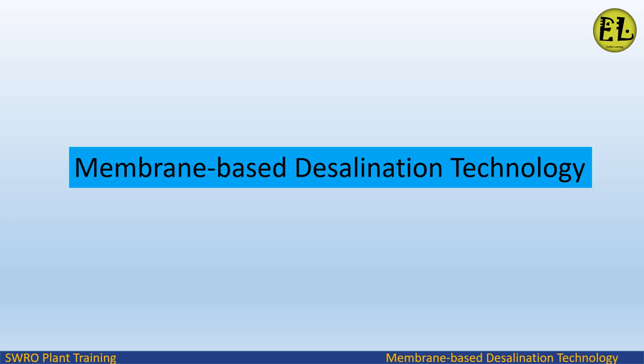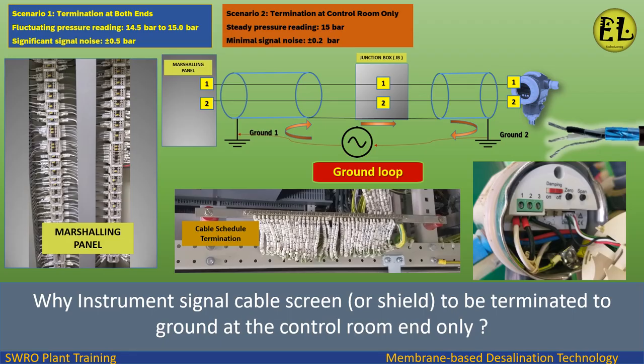Welcome to Endless Learning Training Series: The Membrane Based Desalination Technology. In this presentation we will study about why instrument signal cable screen or shield should be terminated to ground at the control room end only, and the screen should be left floating at the field instrument end, to avoid ground current loops.